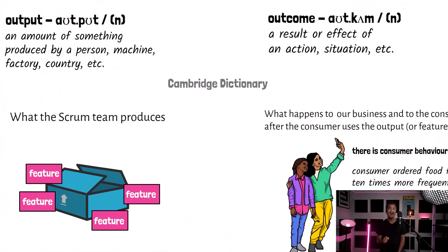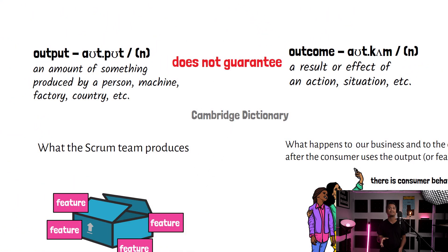Here is the most interesting part: output does not guarantee outcome. Just because the Scrum team completed many product backlog items, or just because their velocity or throughput every sprint is consistently high, it does not guarantee there will be an outcome.